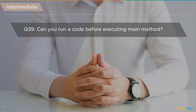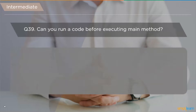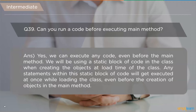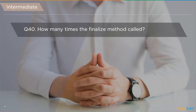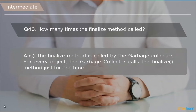The next question is: can you run code before executing the main method? Yes — using a static block of code in the class. When creating objects at load time of the class, any statements within the static block execute once while loading the class, even before object creation in the main method. The last intermediate question: how many times is the finalize method called? The garbage collector calls the finalize method just once for every object.